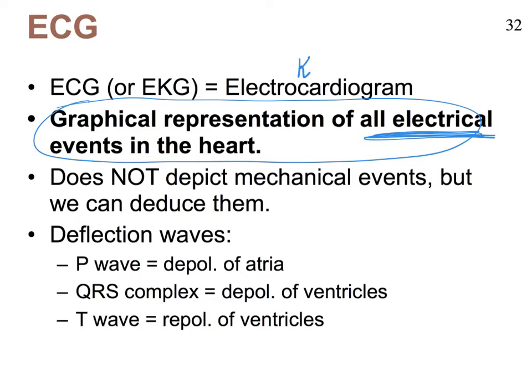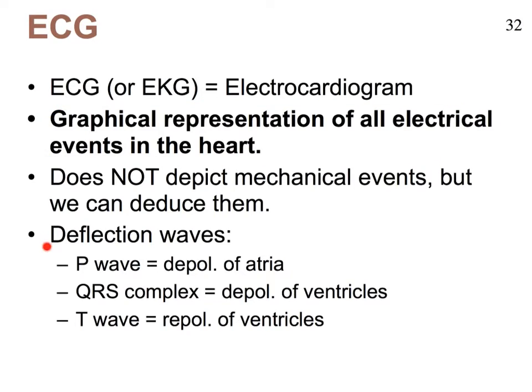So be sure you understand what we're talking about here. An EKG is made up of different waves we refer to as deflection waves. We'll focus on just the three major ones — there are additional ones, but that's beyond the scope of this class. So we have the P wave, the QRS complex, and the T wave.